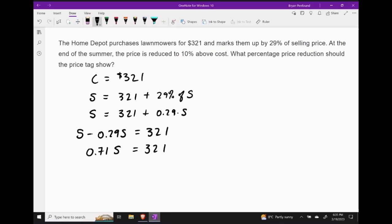In other words, 71% of the selling price is actually our cost price of $321. In order to get to our selling price, we take $321 and we'll divide by 0.71. This tells us that our selling price is $452.11.